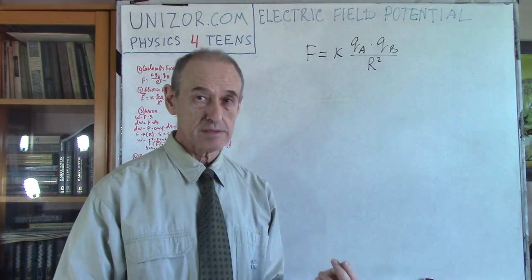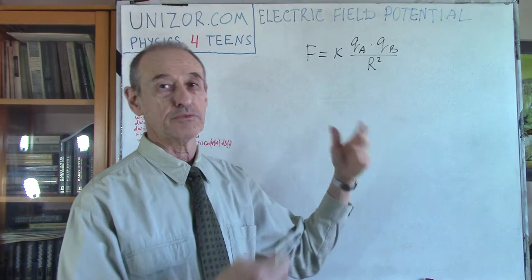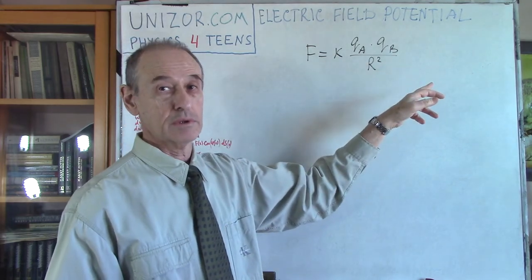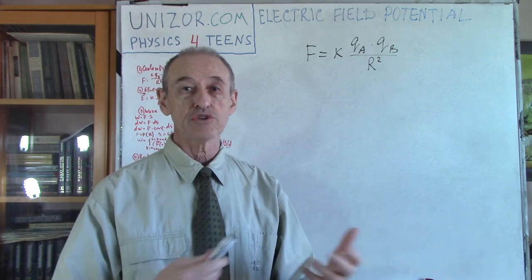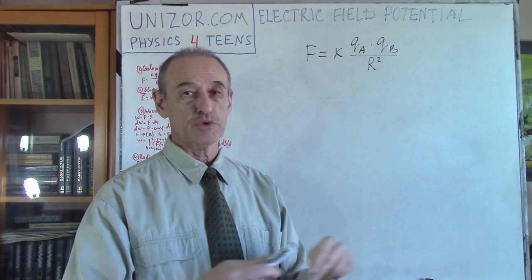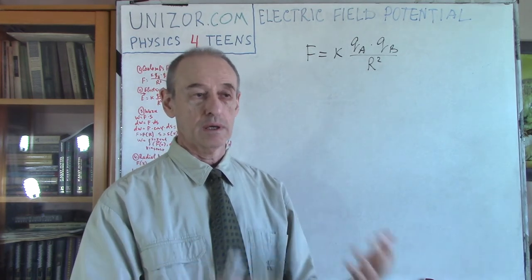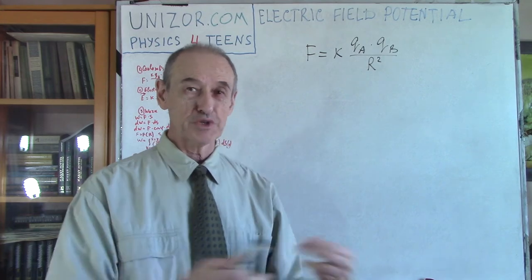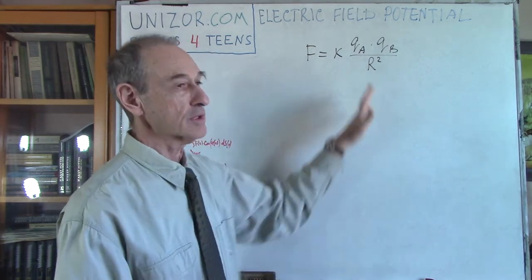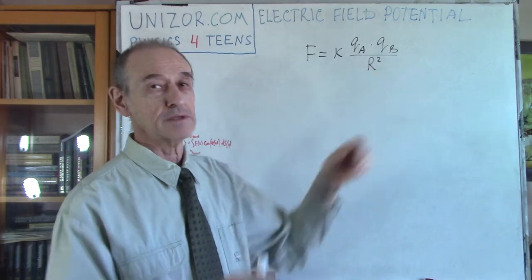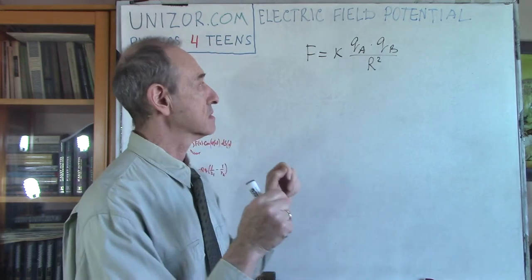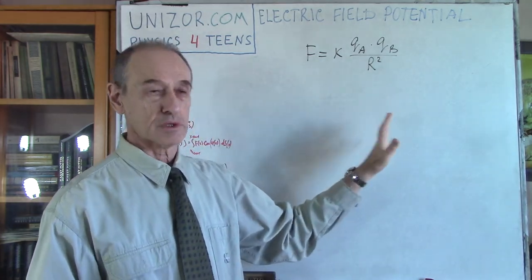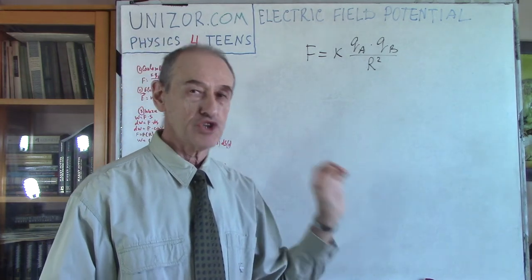If we assign signs — positive for deficiency of electrons and negative for excess of electrons — then the sign of the product signifies the direction of the force: attracting or repelling. If both charges are positive or both are negative, it's always repelling. If one is positive and another is negative, that's attracting. This is all about point objects — electrically charged point objects.